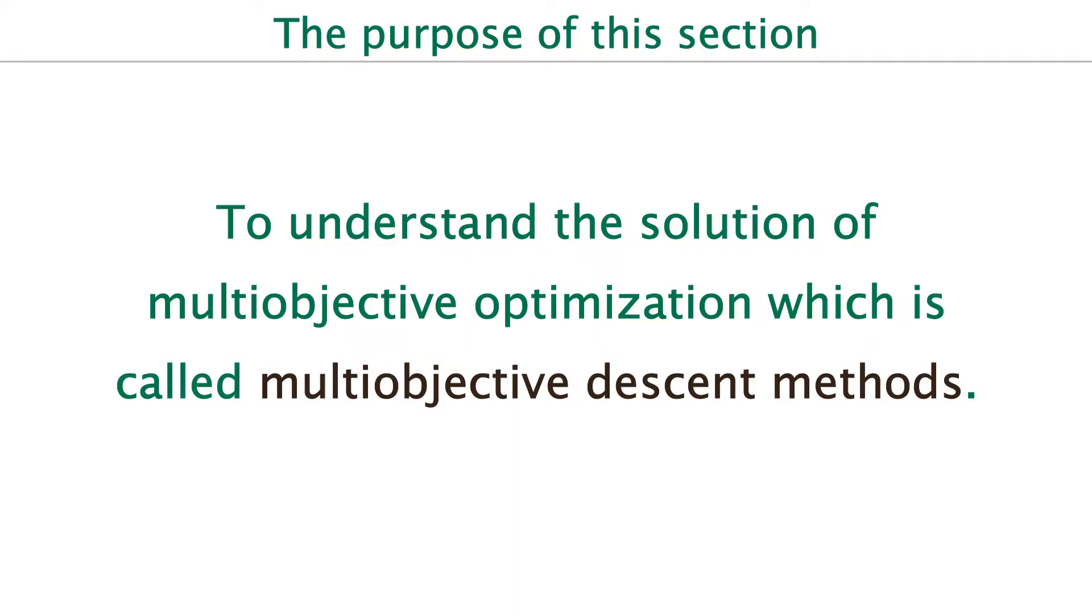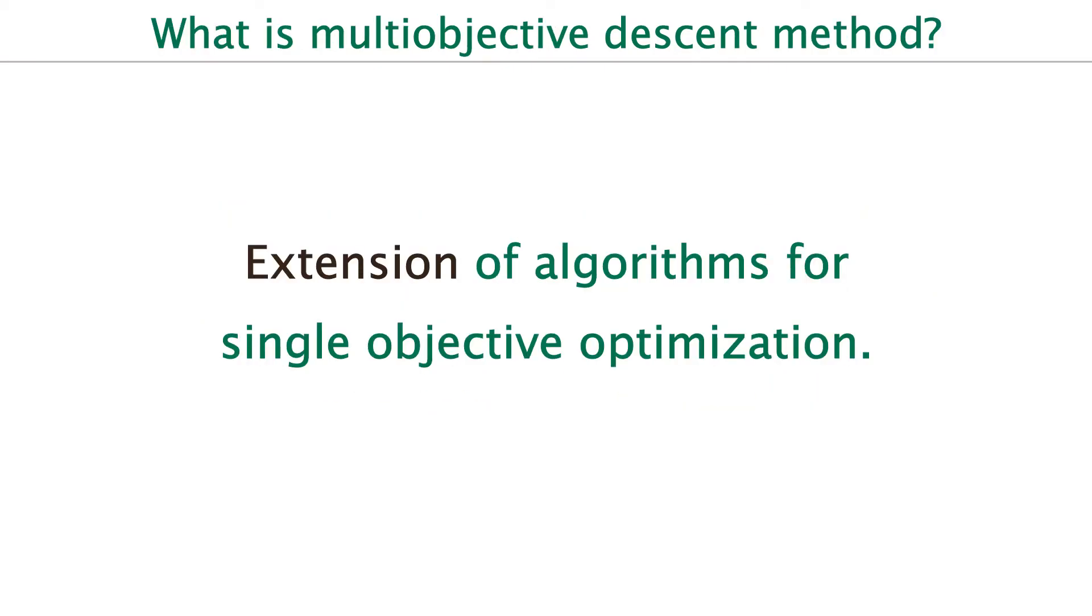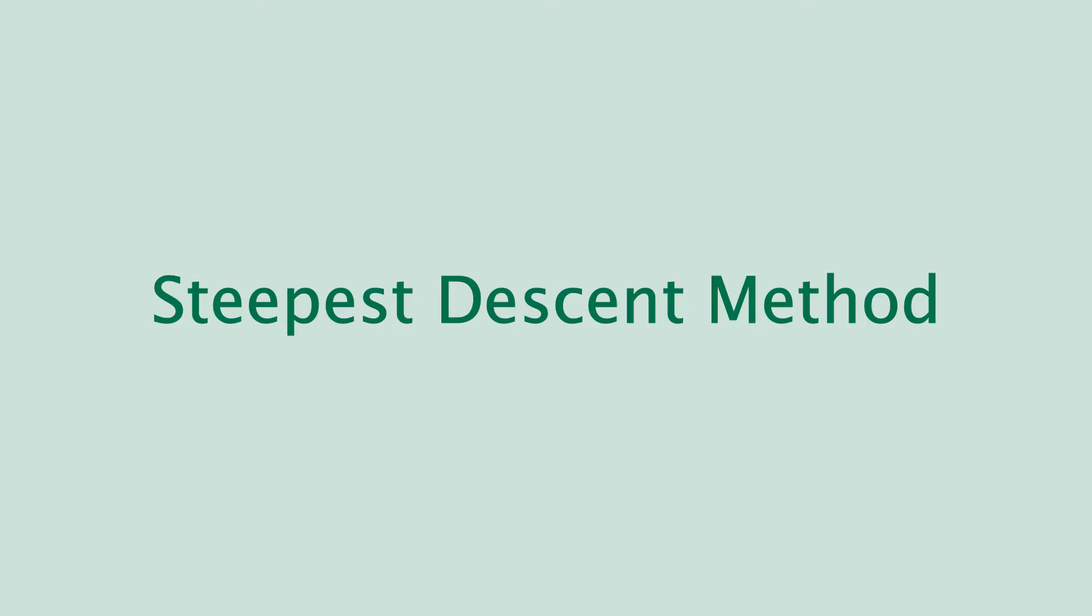Next, I'll tell you how to solve multi-objective optimization. In this video, I'll explain some types of multi-objective descent method. Multi-objective descent method is an extension of method for single-objective optimization. Now, I'll show you two extensions of single-objective algorithms. First, I'll explain steepest descent method.